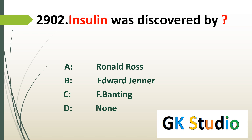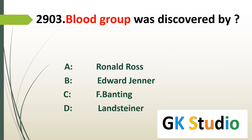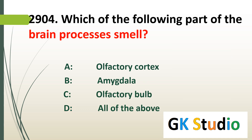Insulin was discovered by Fleming. Insulin ko Fleming ne discover kiya. Blood group was discovered by Landsteiner. Blood group ki tashkhees sab se pehle Landsteiner ne ki.